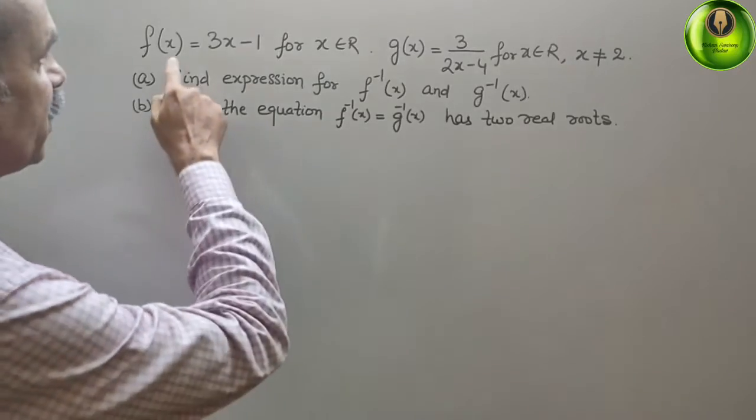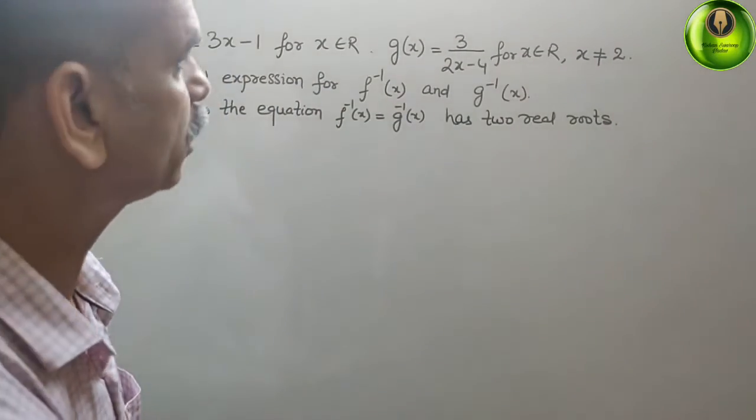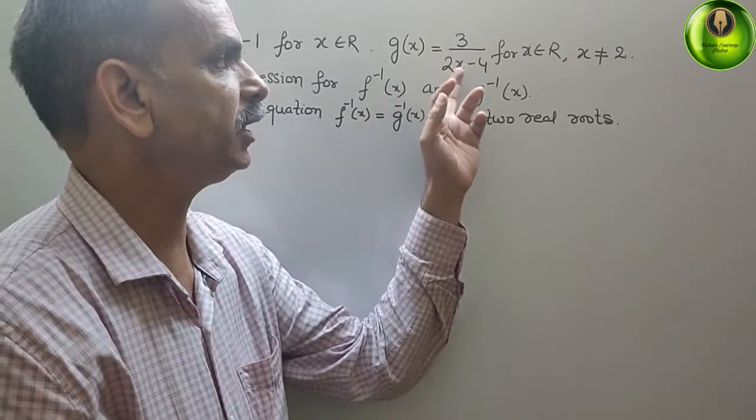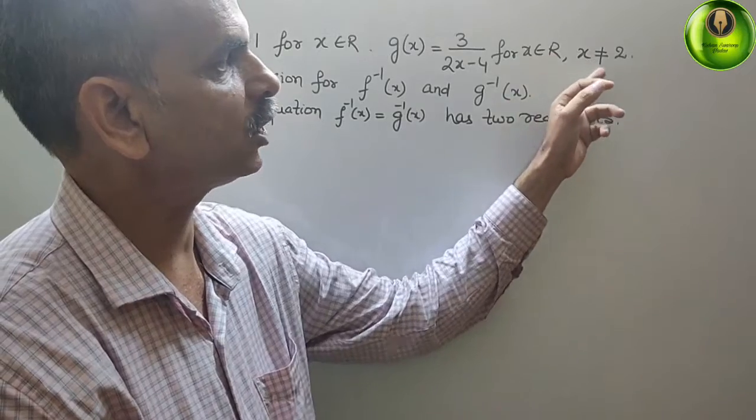Your question is: f(x) equals 3x minus 1 for x belongs to the real numbers. g(x) equals 3 divided by 2x minus 4 for x belongs to the real numbers, x is not equal to 2.